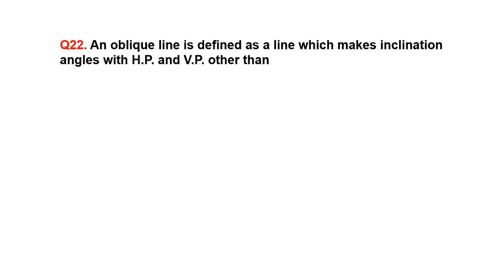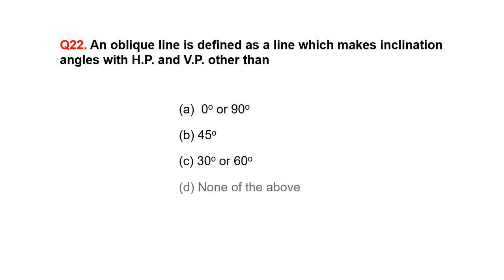An oblique line is identified as a line which makes inclination angles with HP and VP other than: A. 0 degree or 90 degree, B. 45 degree, C. 30 degree or 60 degree, D. None of the above.